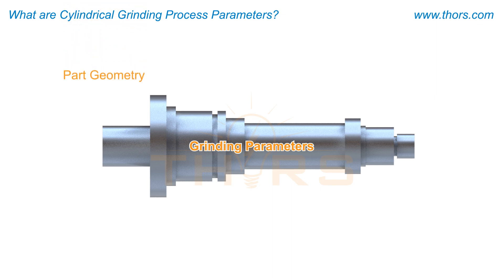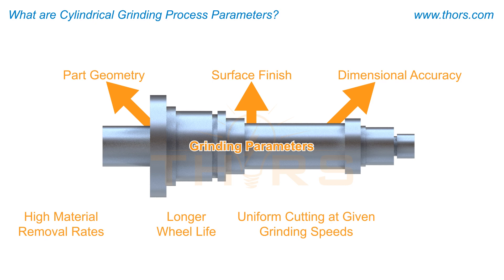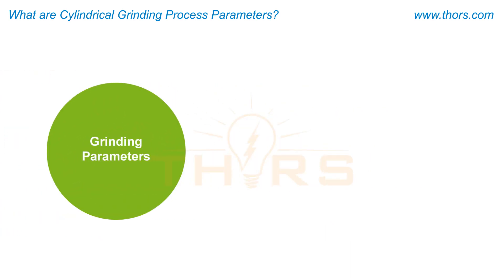The machining characteristics such as part geometry, surface finish, and dimensional accuracy determine the grinding parameters. In addition, other desirable performance properties, such as high material removal rates, longer wheel life, uniform cutting at given grinding speeds, and self-sharpening action that reduces the frequency of dressing cycles, are taken into consideration when setting the parameters. The grinding parameters are established within the limits of the machine capacity.